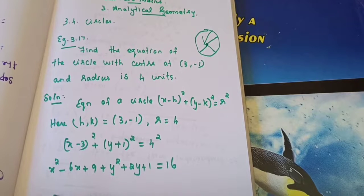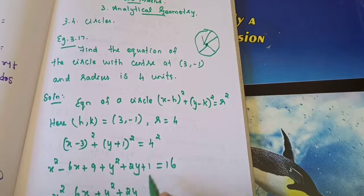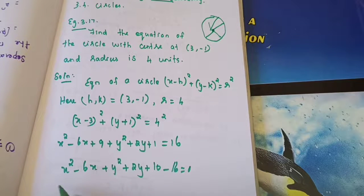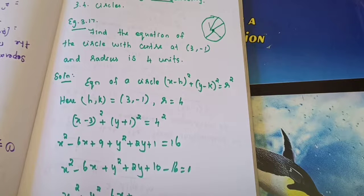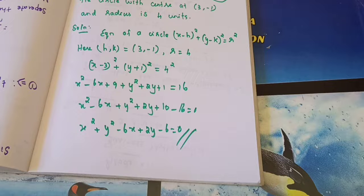Bring all terms to one side: x square minus 6x plus y square plus 2y plus 10 minus 16 equals 0. Simplifying: x square plus y square minus 6x plus 2y minus 6 equals 0. That's the answer — just substitute into the formula. If the center is at the origin, use x square plus y square equals R square for the next problem.